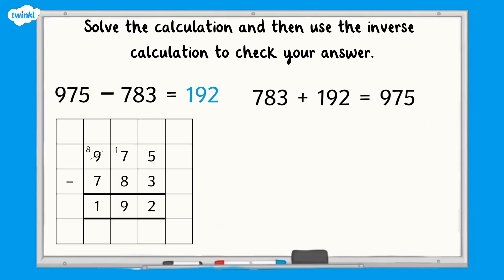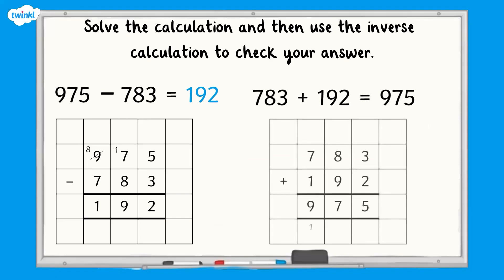783 add 192 equals 975, which matches, so our subtraction calculation is correct.